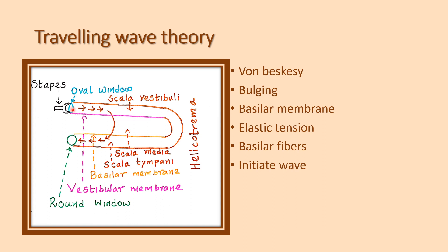So, hitting the oval window moves the perilymph in the scala vestibuli, which hits the vestibular membrane and moves the endolymph in the scala media. This produces bulging of the basilar membrane, creates elastic tension in the basilar fibers, and initiates a wave that is transmitted from the base to the apex of the basilar membrane.